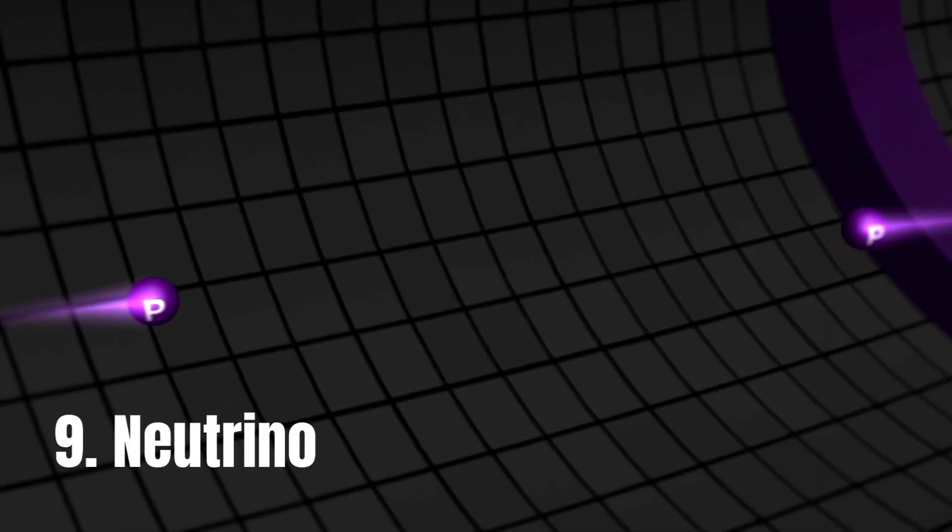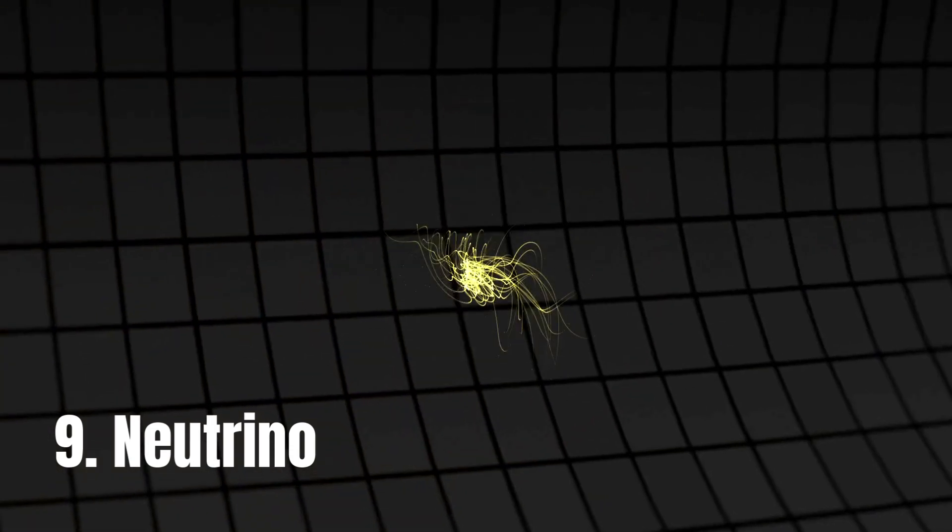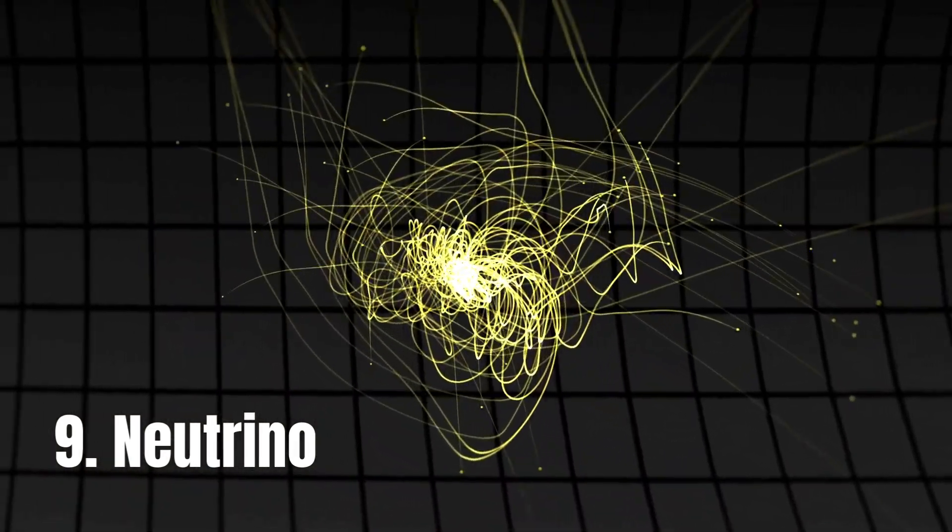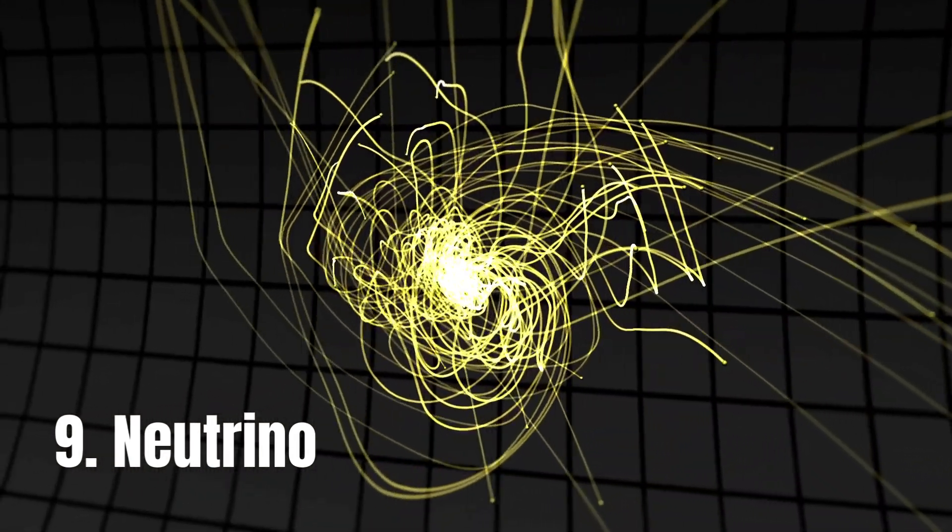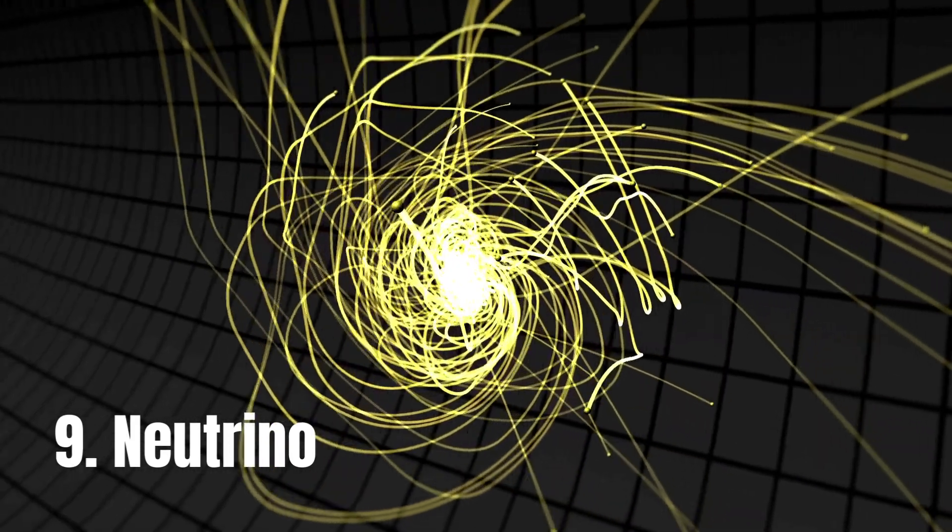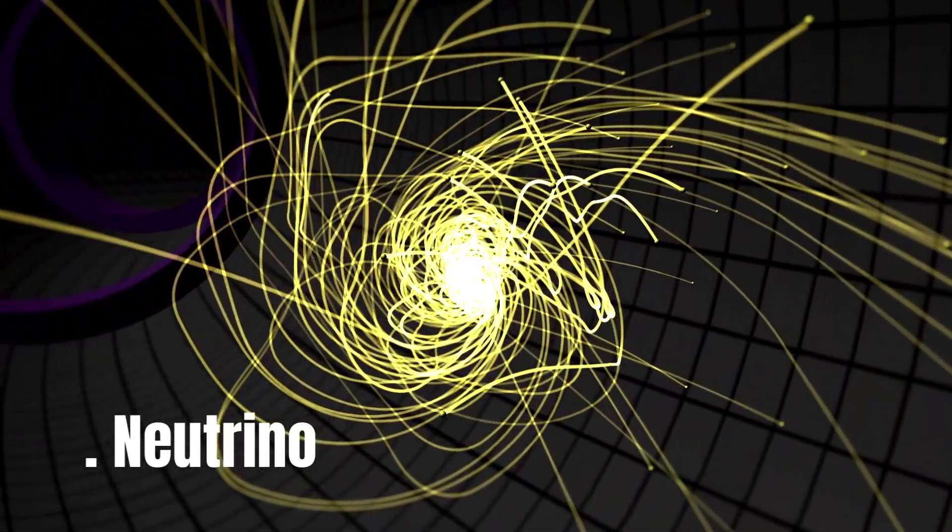Neutrinos are nearly massless and chargeless particles that rarely interact with matter. Neutrinos are produced in nuclear reactions and play a significant role in astrophysics and particle physics.